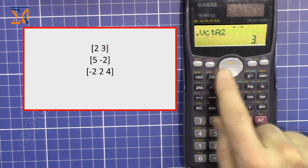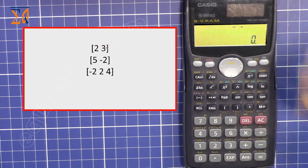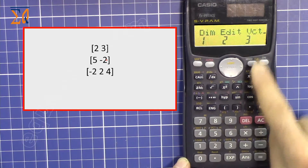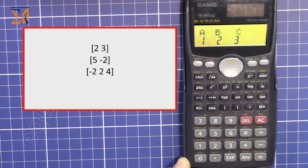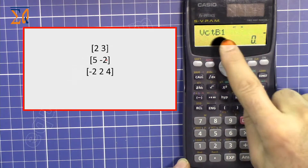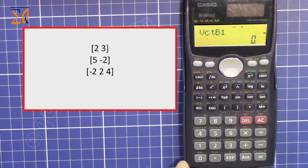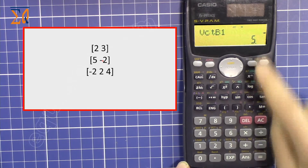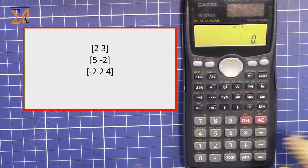Press ALL CLEAR. Now let's enter the second vector into memory B. Press SHIFT 5, then 1 for dimension, then 2 to select memory B. The dimension is 2, press equals. Enter B1 as 5, press equals, then B2 as minus 2, press equals. Vector B is now stored.